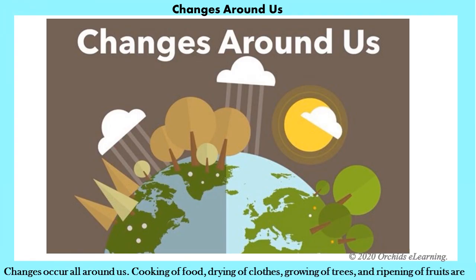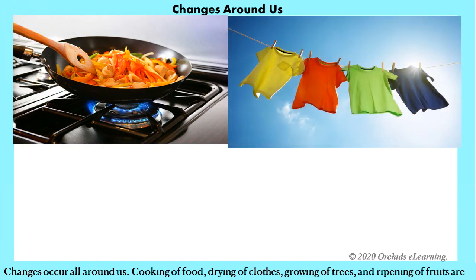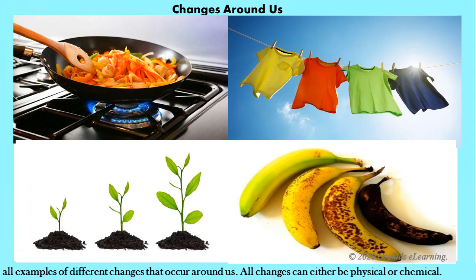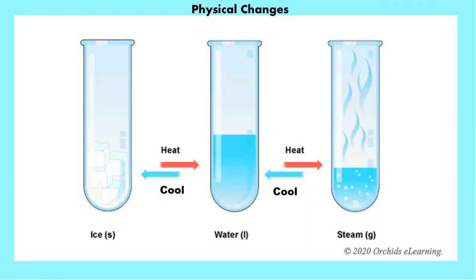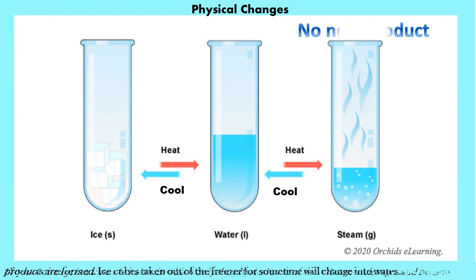Changes around us: changes occur all around us. The cooking of food, drying of clothes, growing of trees, and ripening of fruits are all examples of different changes that occur around us. All changes can either be physical or chemical. Physical change is a type of change in which only the physical state of the substance changes and no new products are formed.